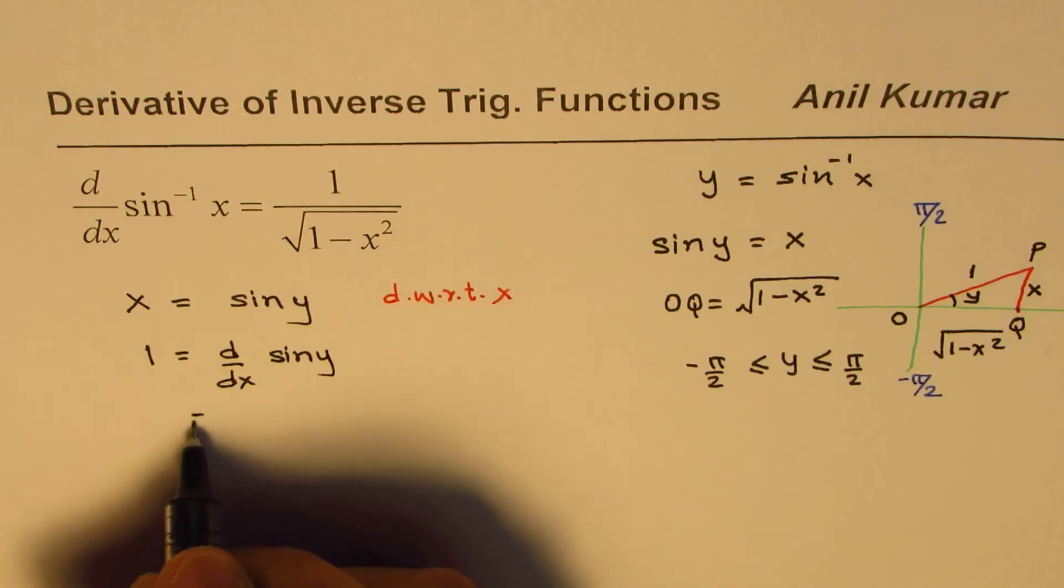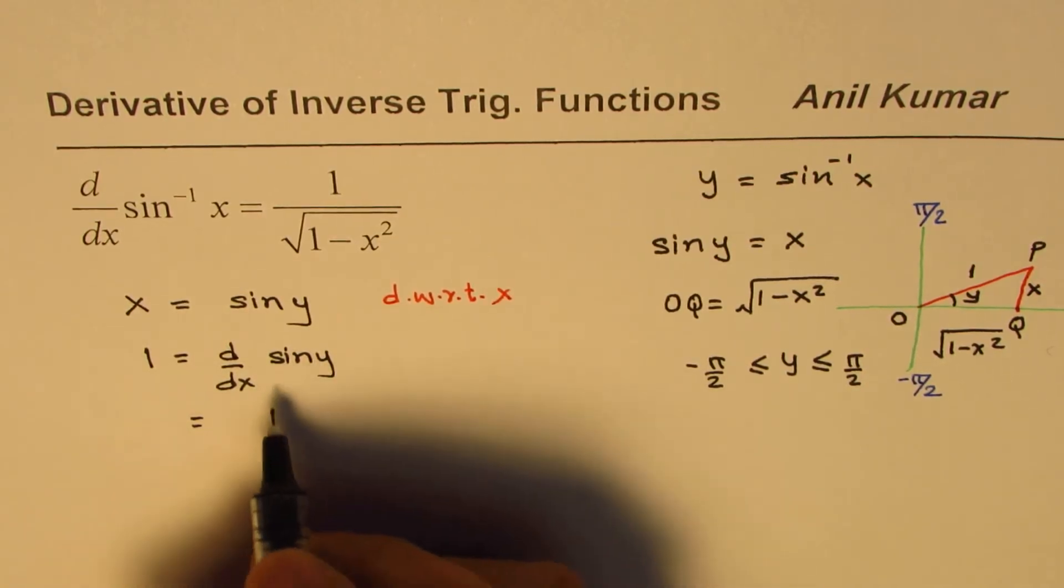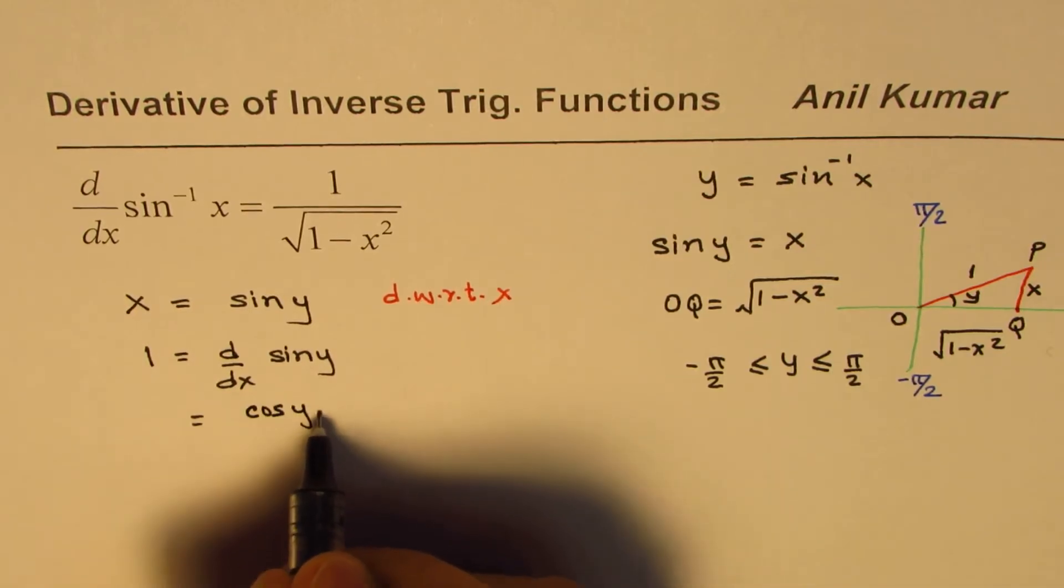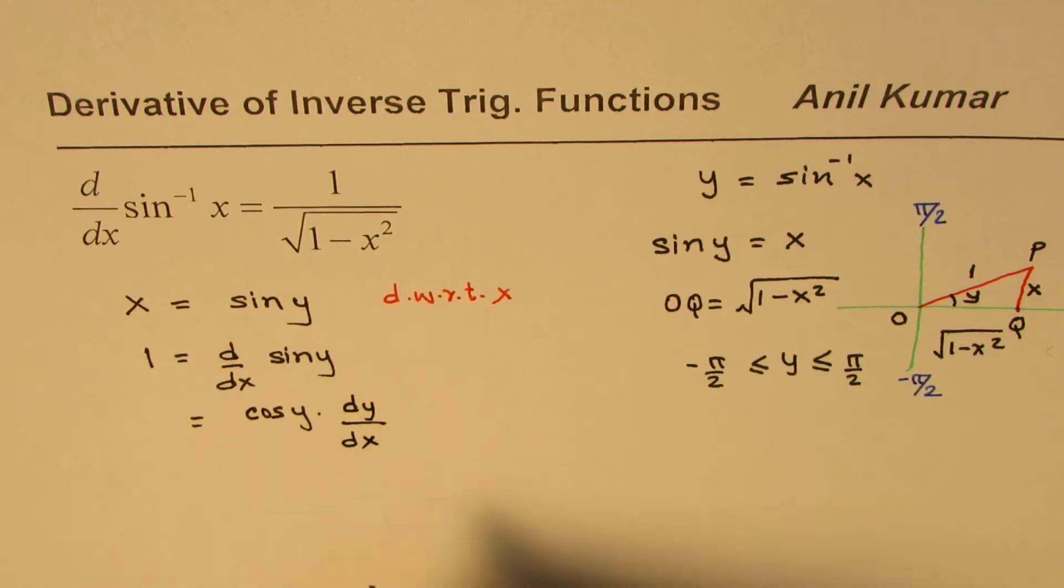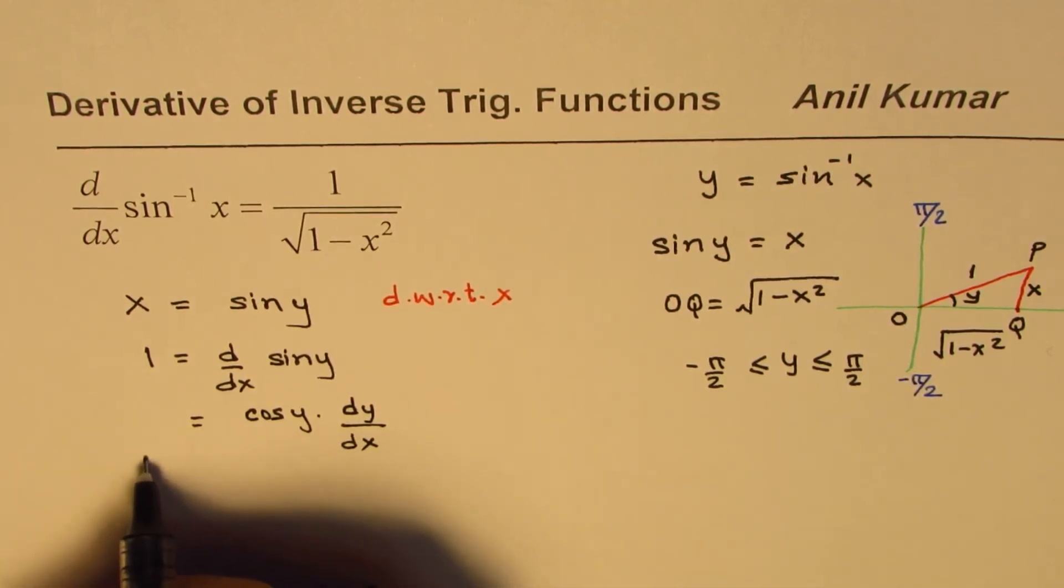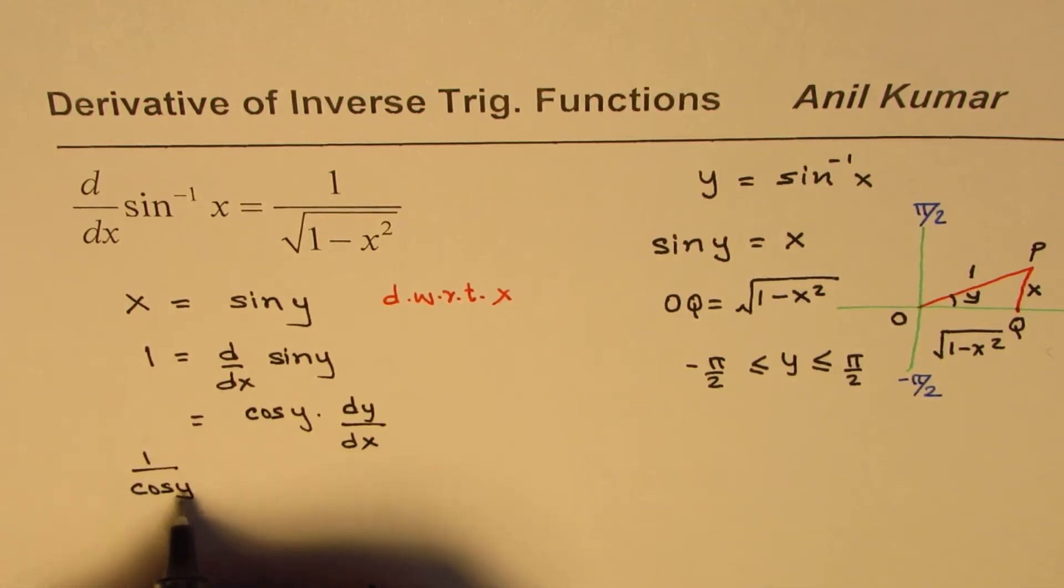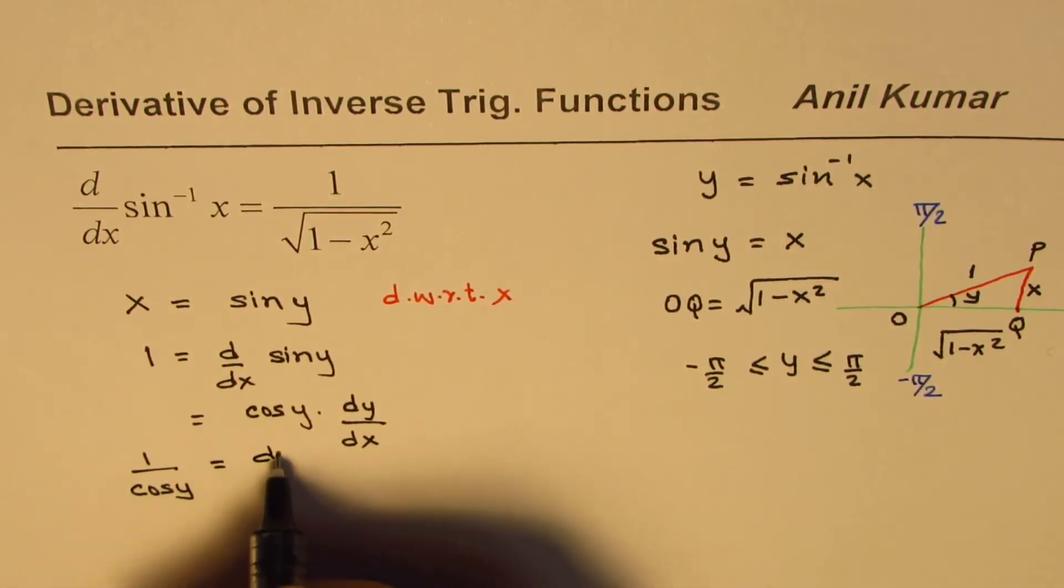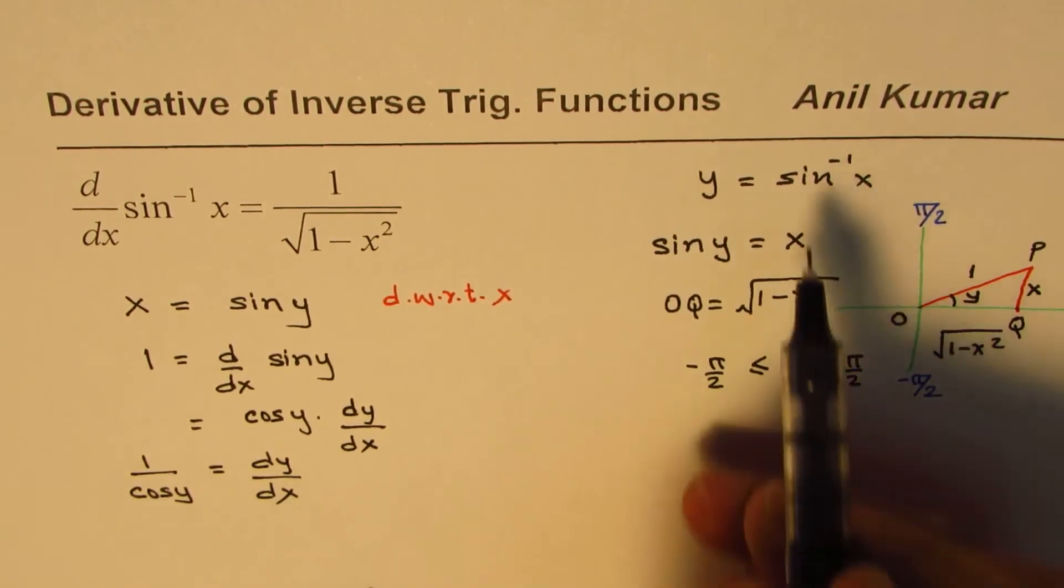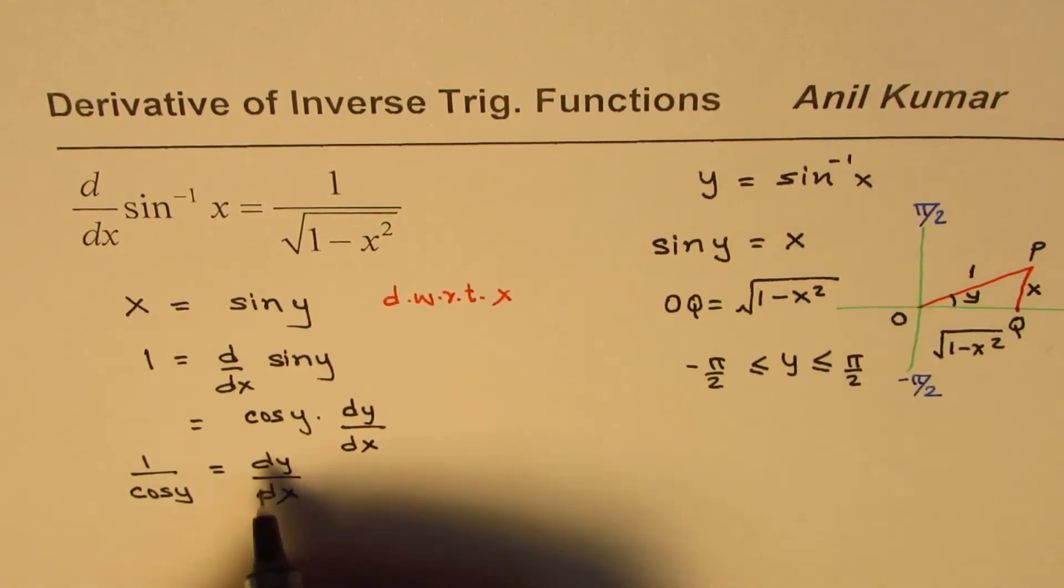Now, d dx of sine y will be derivative of sine y, which is cos y times dy dx. So from here, we can find what dy dx is. So that will be 1 over cos y. So 1 over cos y is dy dx. So we have found the derivative. y for us is sine inverse x. So y is sine inverse x.